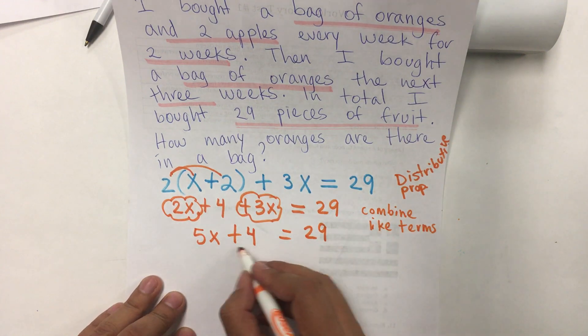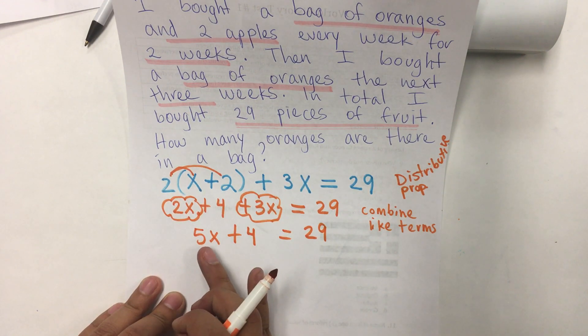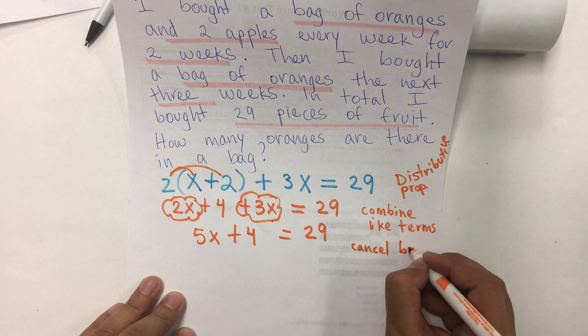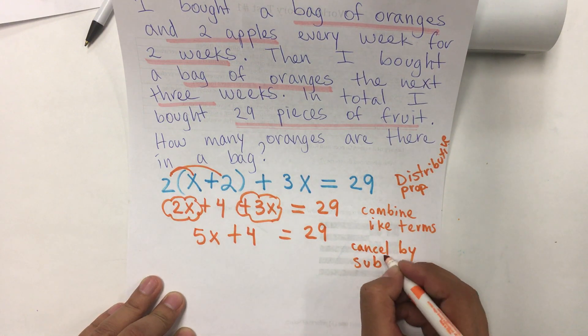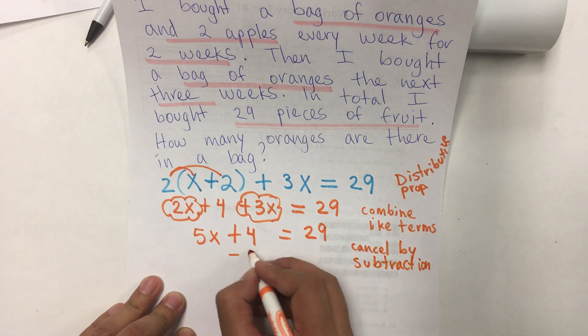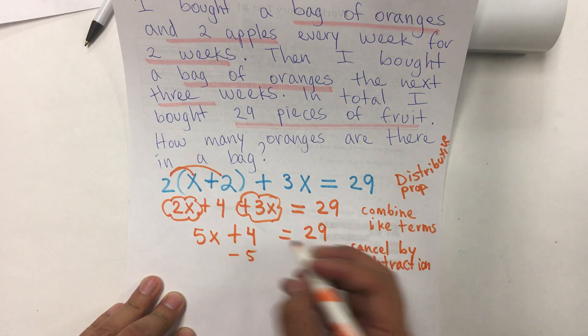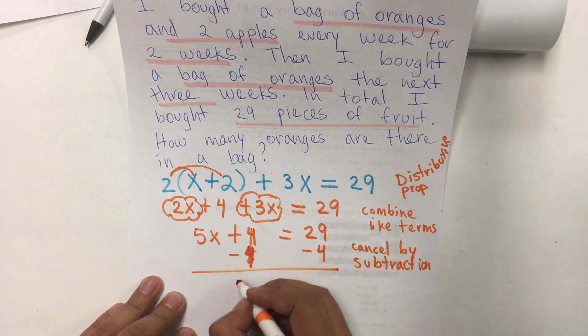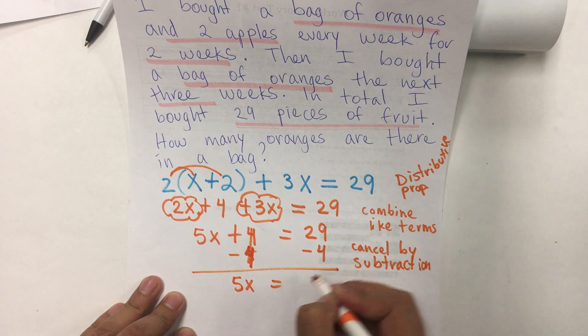Now, I'm going to cancel by subtraction. Remember that when we have multiplication and addition, we cancel the addition first. So, cancel by subtraction. Minus 4, minus 4. And, so, 5x equals 29 minus 4 is 25.